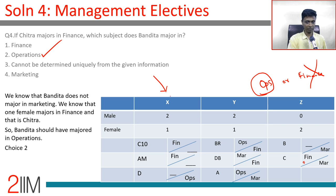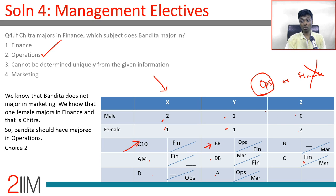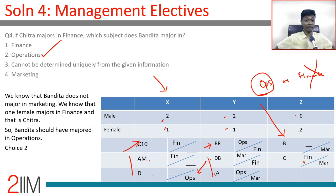Once the grid is fully filled, these four questions become very straightforward. The key steps were: establish the institute split (two males and one female in X and Y, two females in Z), place Barun and Chetan directly, use the pairing constraints for Adriana-Deb and Chetan-Amit, then place Daisy in X minoring in Operations, which cascades all remaining placements. This is definitely a problem worth attempting in the exam.